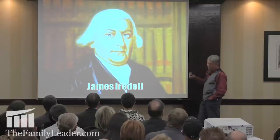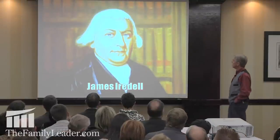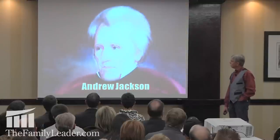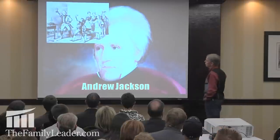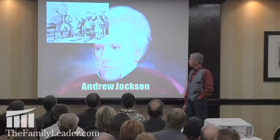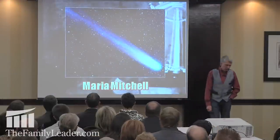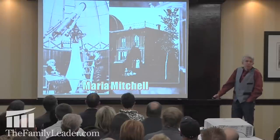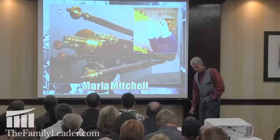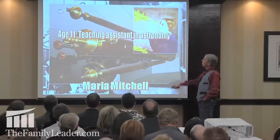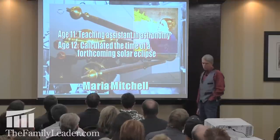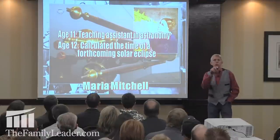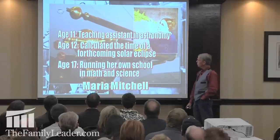James Iredell, ratifier of the Constitution appointed to the U.S. Supreme Court by George Washington, was at 17 years old a chief financial officer running all public finances for North Carolina. Andrew Jackson at 13 was already a prisoner of war fighting as a soldier in the American Revolution. Maria Mitchell, the first woman in America to discover a comet, was a teaching assistant in astronomy at 11, calculated the time of a forthcoming solar eclipse by longhand at 12, and at 17 was running her own school in math and science.